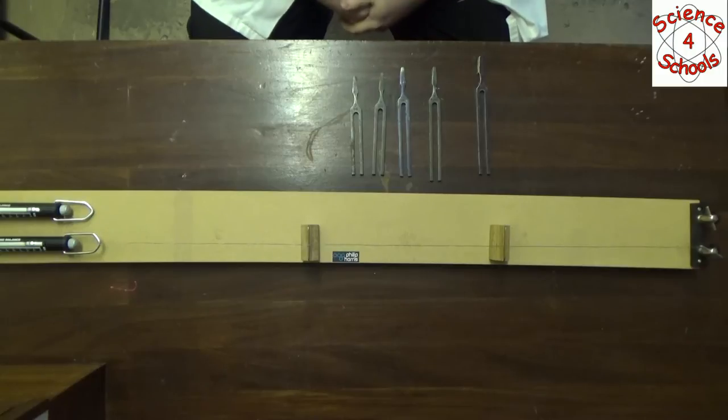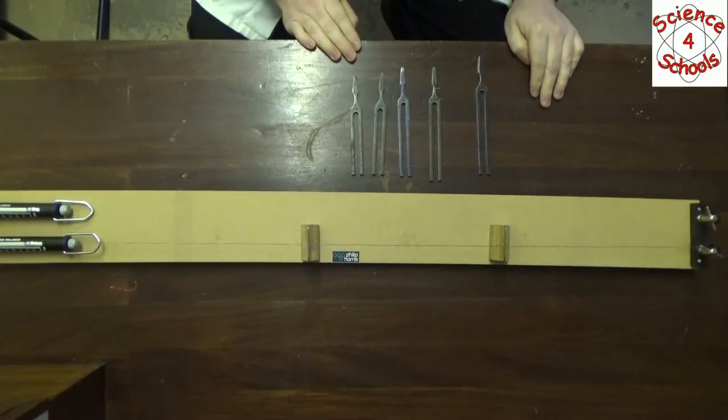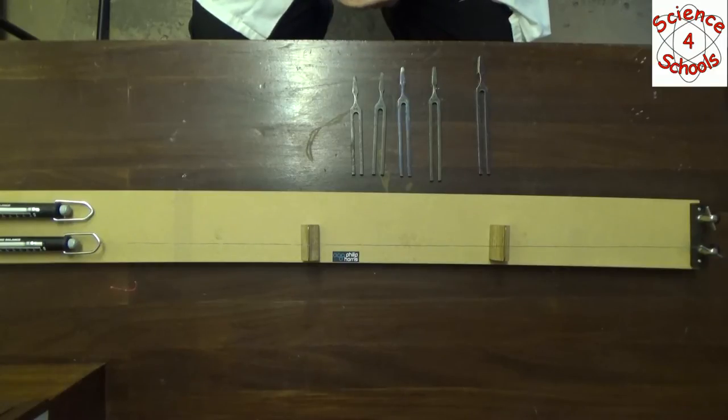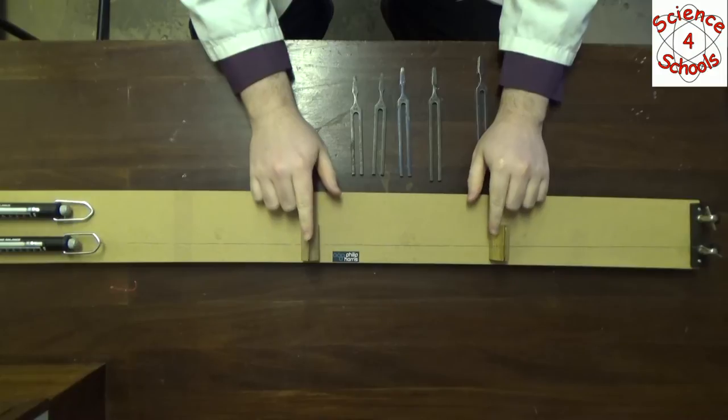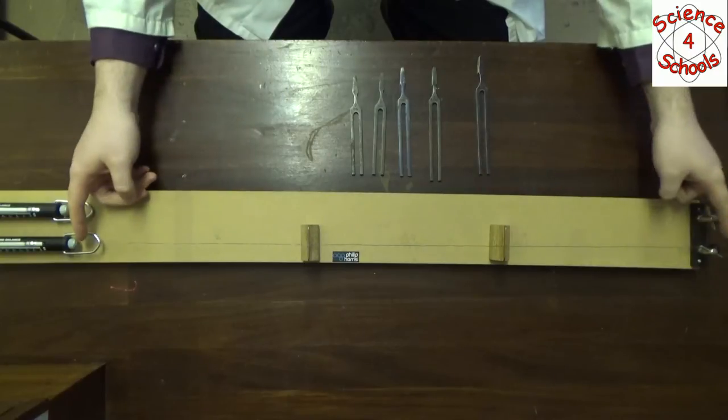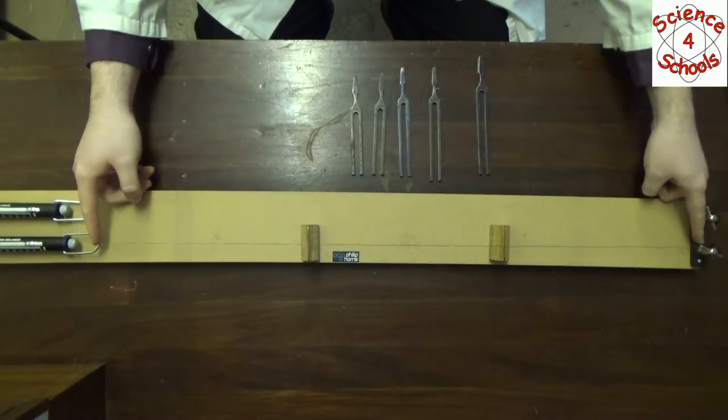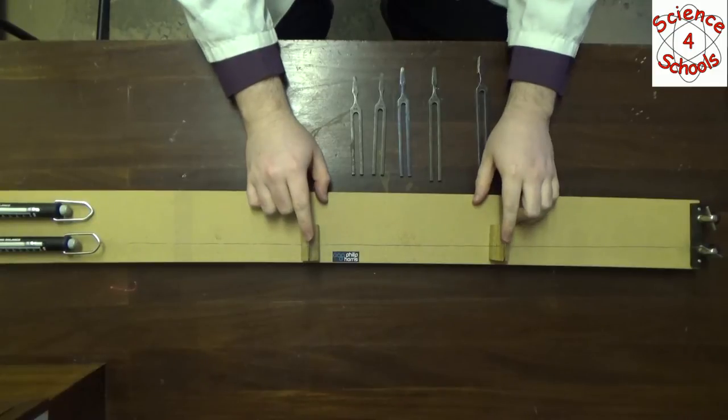So here's our setup then. We have our sonometer here. I have my selection of tuning forks. Now the way to set this up usually is to make sure the length of the string you're using between the two bridges is about a third the length of the entire string. So the total length is about 75 centimeters here, and the distance between these two bridges I've set to about 25 centimeters.